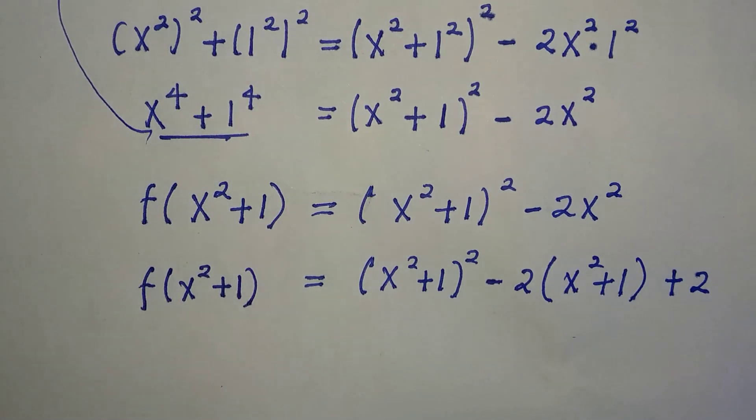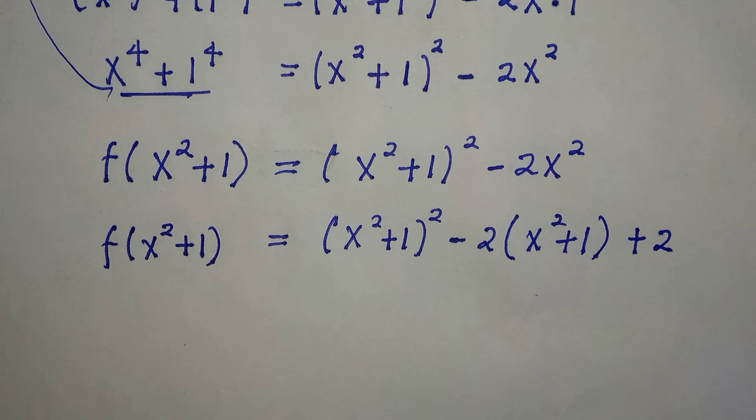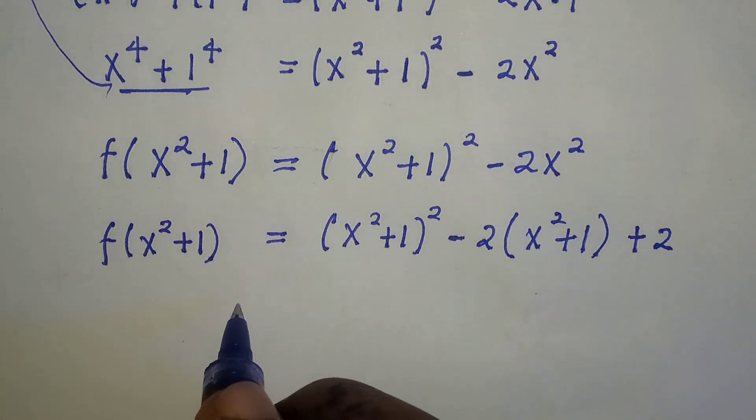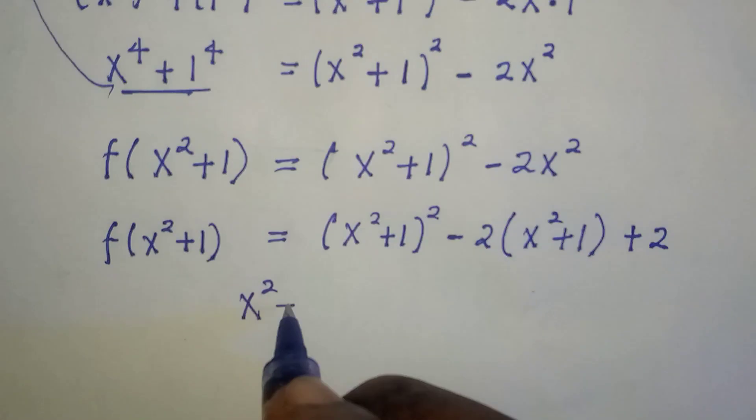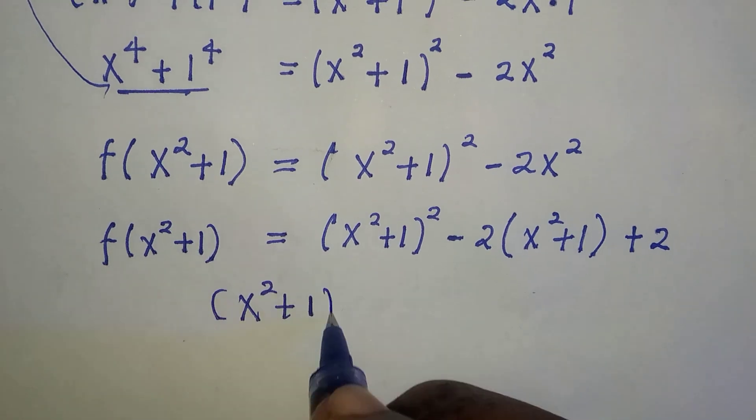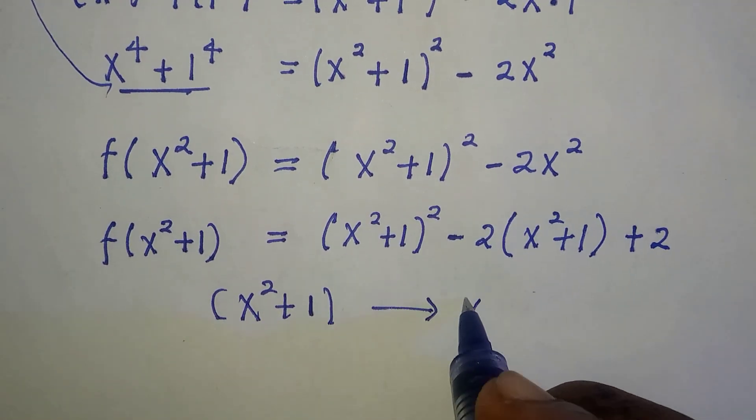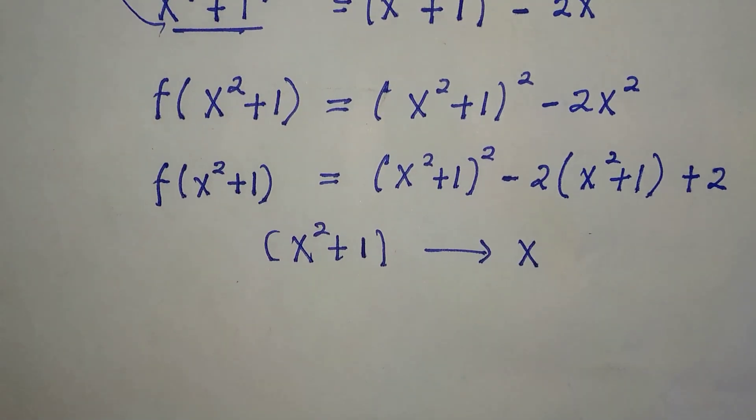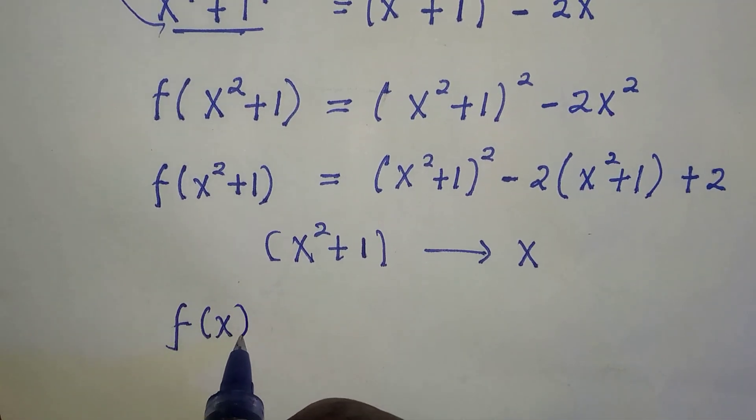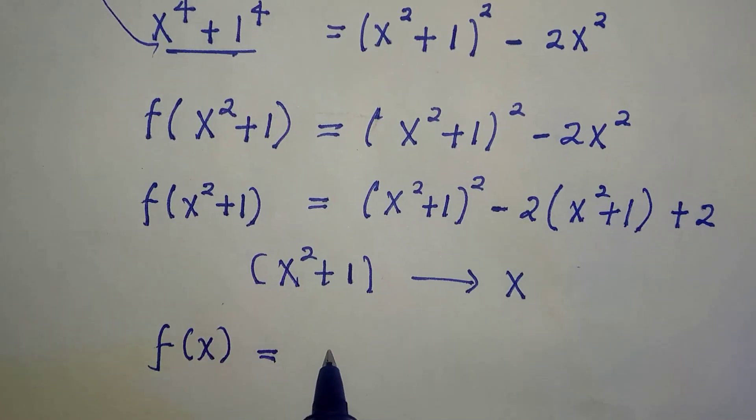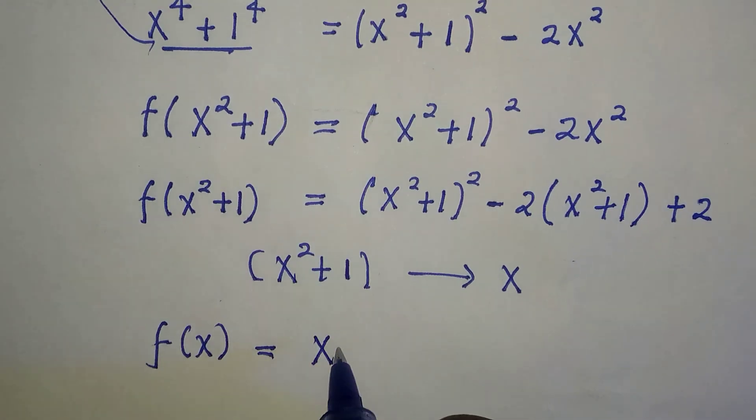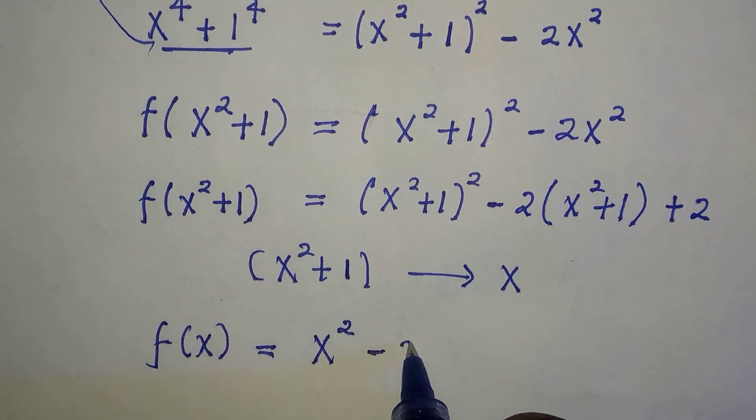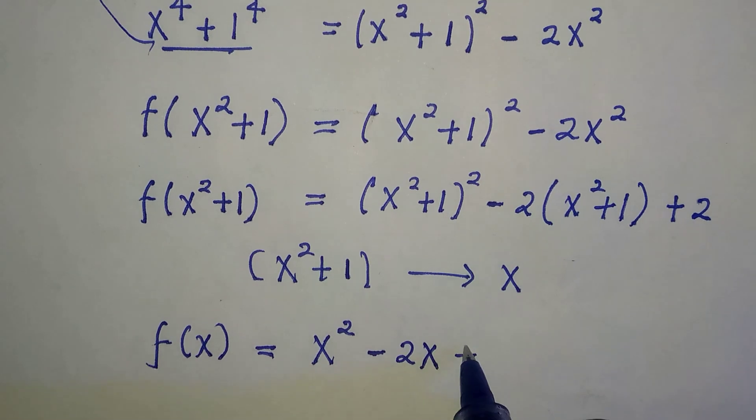So since this is making sense with all what we have in these functions, it has given what we have in the right-hand side. We don't need to be x² + 1 because 2 is a constant. So if I replace x² + 1 by x, we are going to have f(x) = x² - 2x + 2.